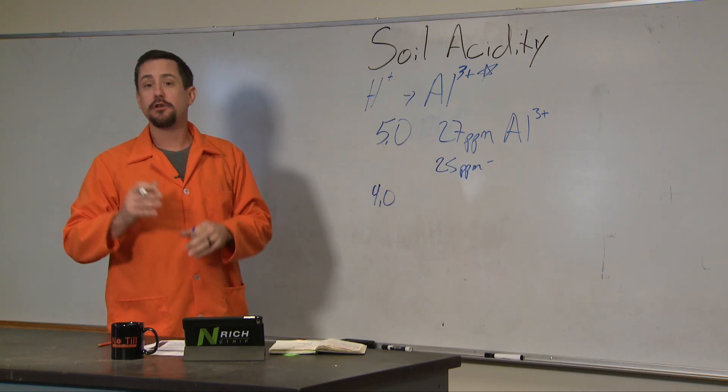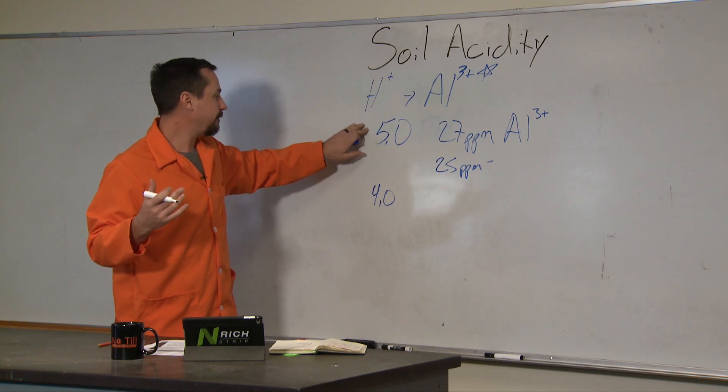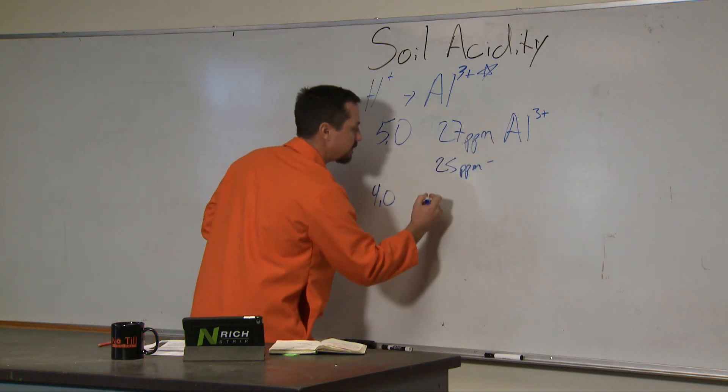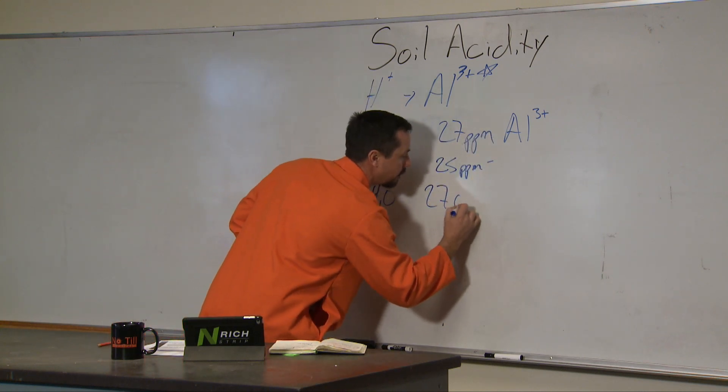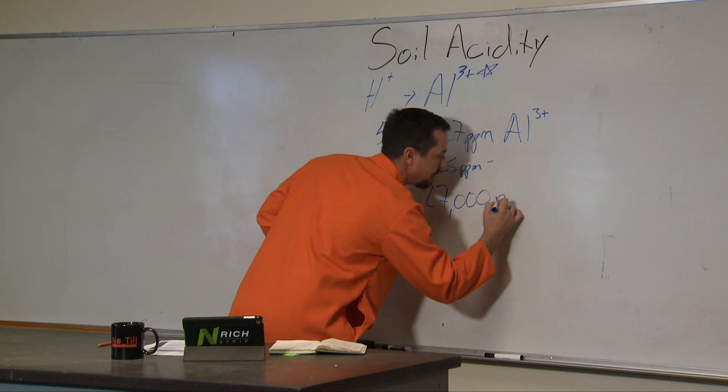From a pH of 5 to 4, the aluminum goes from 27 ppm to 27,000 ppm.